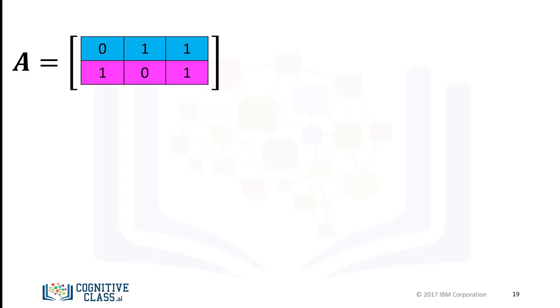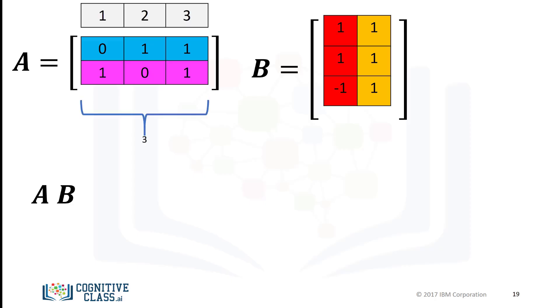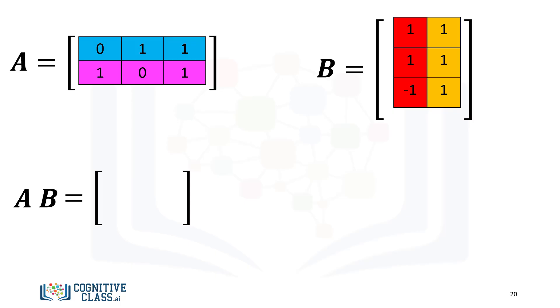We can also perform matrix multiplication with NumPy arrays. Matrix multiplication is a little more complex, but let's provide a basic overview. Consider matrix A, where each row is a different color, and matrix B, where each column is a different color. In linear algebra, before we multiply matrix A by matrix B, we must make sure that the number of columns in matrix A — in this case 3 — is equal to the number of rows in matrix B — in this case 3. For matrix multiplication, to obtain the i-th row and j-th column of the new matrix, we take the dot product of the i-th row of A with the j-th column of B.